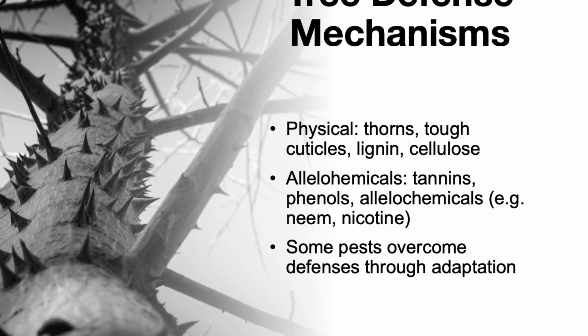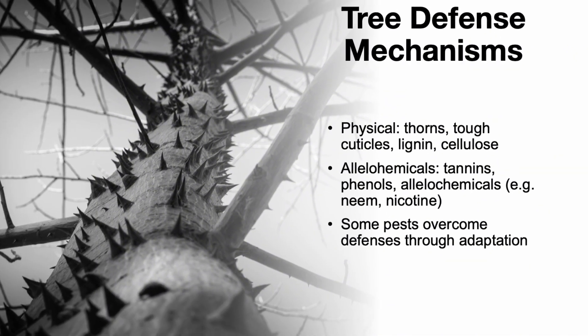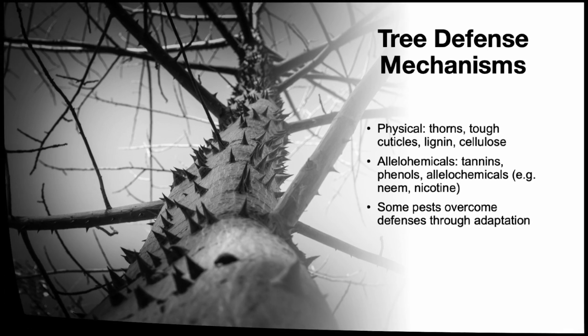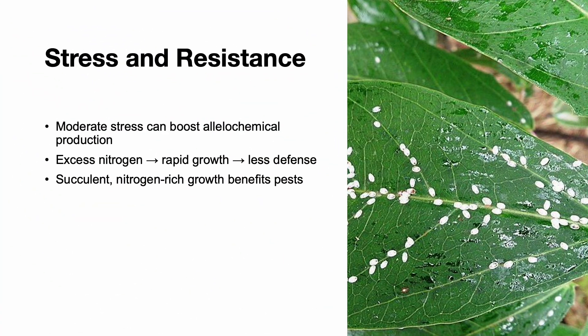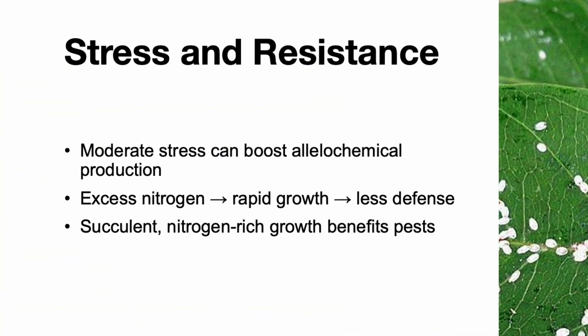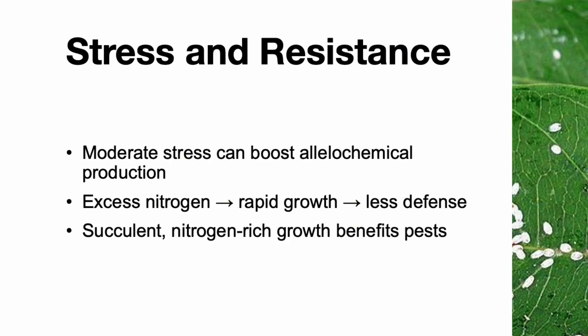Trees have natural defense systems. They can use physical barriers like thorns and thick cuticles, or chemical defenses like tannins or other compounds. Some of these chemicals, like neem and pyrethrin, are even used in organic pesticides. Still, some pests can overcome these defenses, especially if the tree is under stress. Mild stress can sometimes improve resistance by boosting defensive chemical production. But too much nitrogen, especially from fertilizers, can reduce resistance and encourage pests, because fast-growing succulent tissue is more nutritious and attractive to insects.